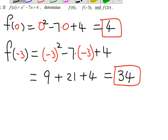And finally, f(2t) equals (2t) squared minus 7 times 2t.